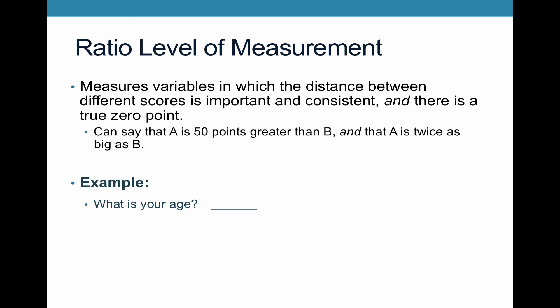Think about this with an example: what's your age? If somebody is 100 and another person is 50, we can say the person who's 100 is twice as old as the person who's 50. Zero means something in that example — it's a newborn baby that has no age. So that would be a ratio level of measurement where you have a meaningful zero point, meaning you can multiply the values by each other and it means something. Those are the four different levels of measurement.